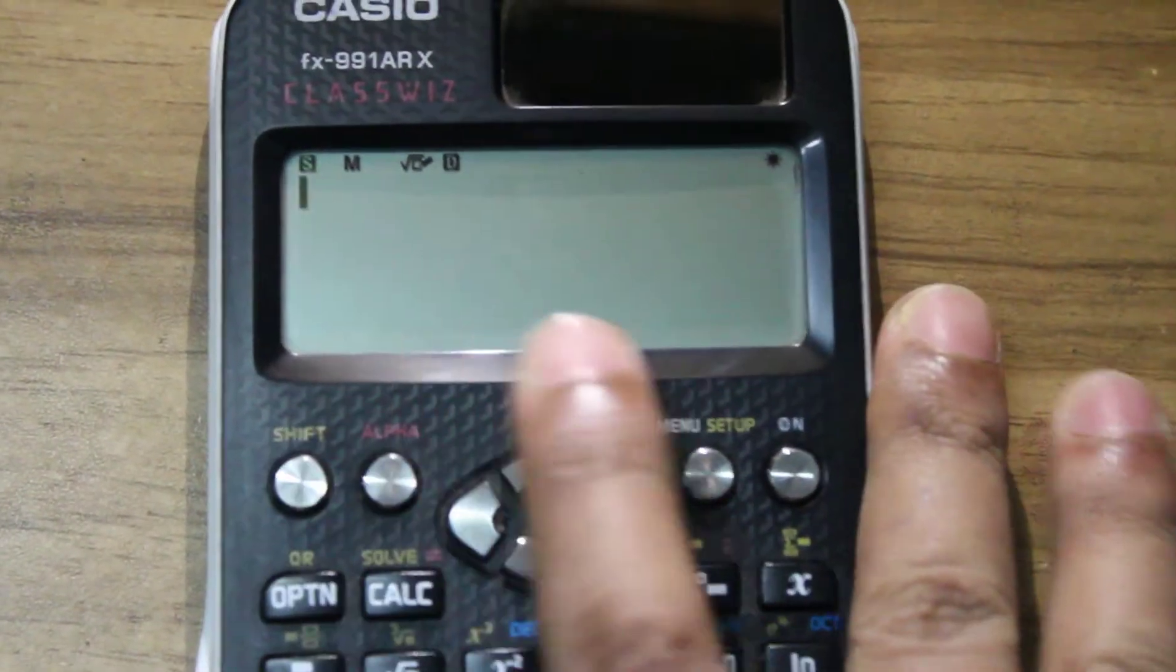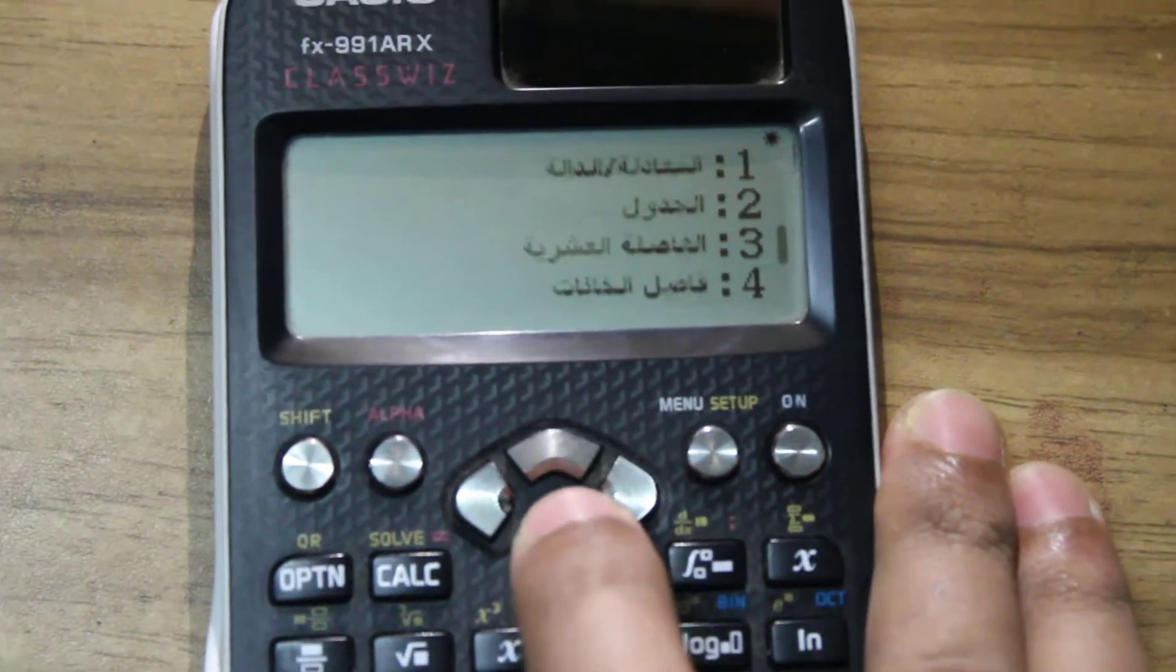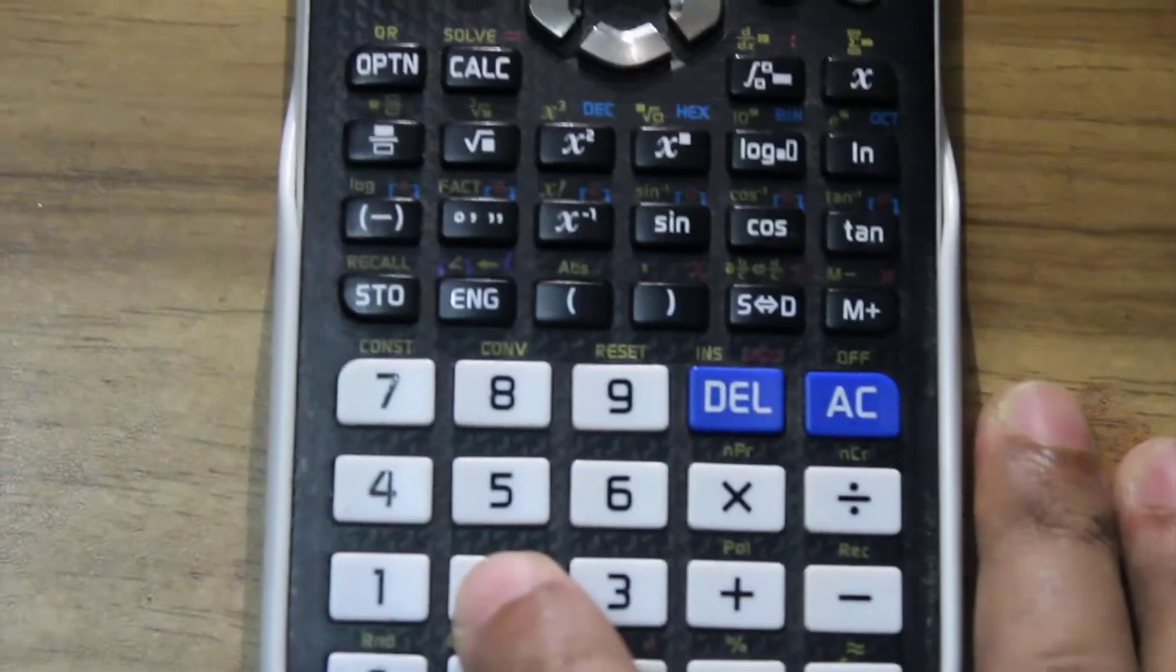From here, press on shift menu. Then press this down button for three times. One, two, three. Then from here, press on two.